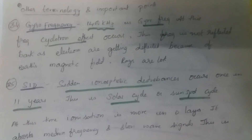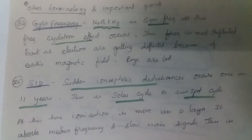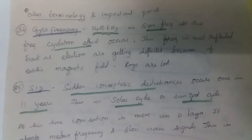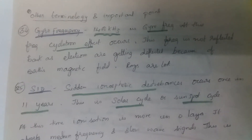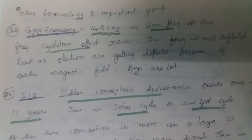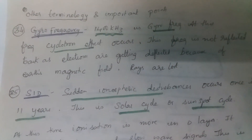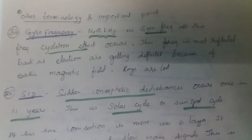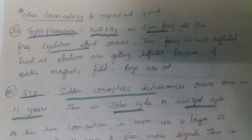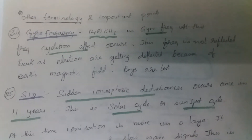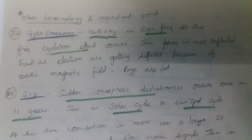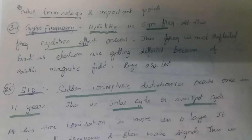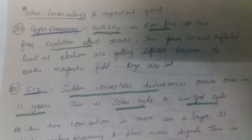Now let's have a look at terminology related to wave propagation. Gyrofrequency is 1400 kilohertz. At this frequency, the cyclotron effect occurs and the frequency is not reflected back, as electrons are getting deflected because of Earth's magnetic field. So the rays are lost.